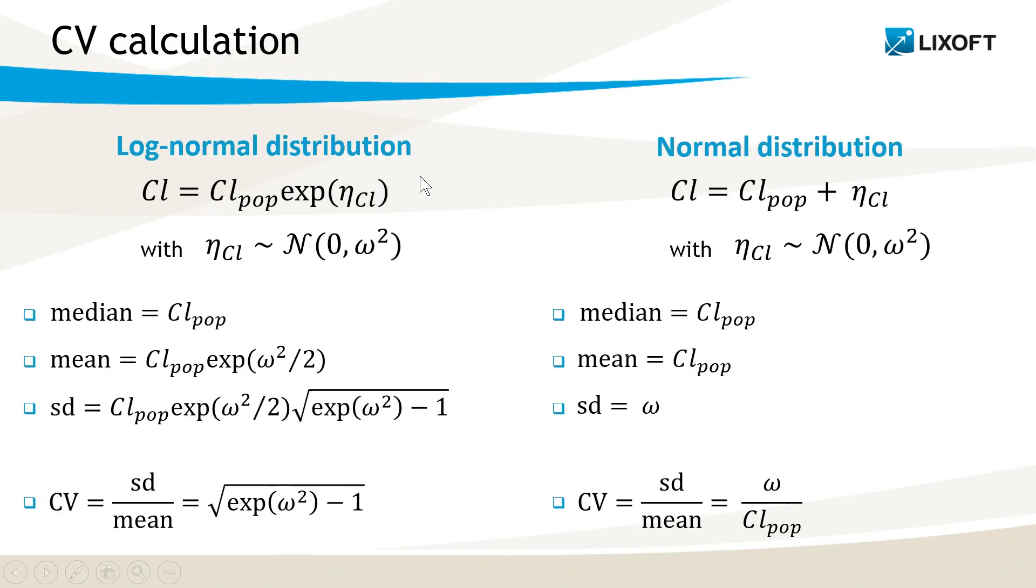Let's see what happens for a log-normal distribution and a normal distribution. If clearance has a log-normal distribution, it will be described by the following formula, where eta are the random effects, which follow a normal distribution centered around 0 and with standard deviation omega. Looking at the distribution of clearance Cl, I can calculate the median, which is Cl pop, the mean, which has the following formula here, and the standard deviation as follows. So if I want to calculate the coefficient of variation, that is the standard deviation divided by the mean, I obtain this formula here.